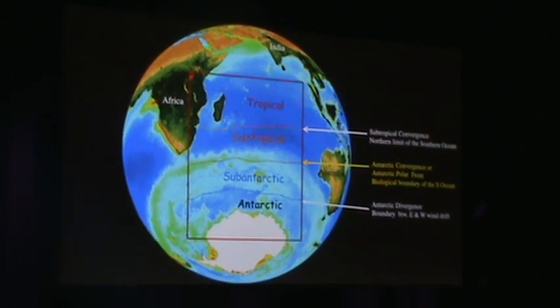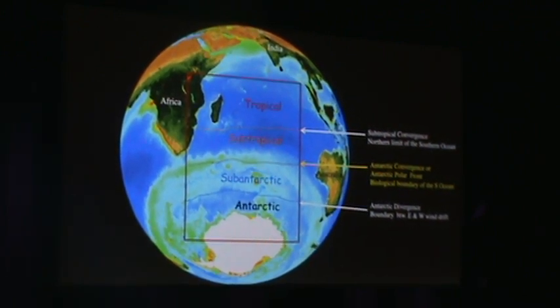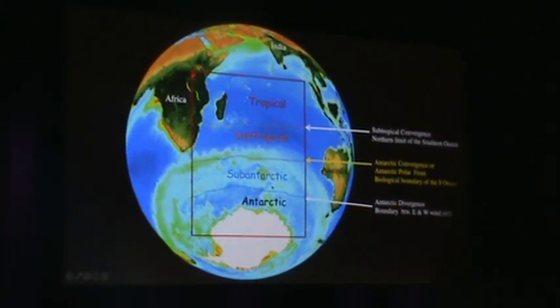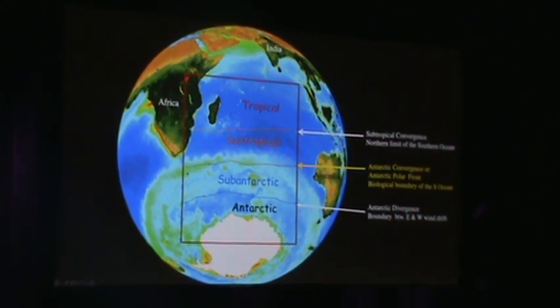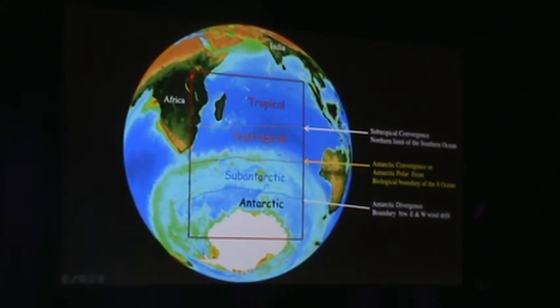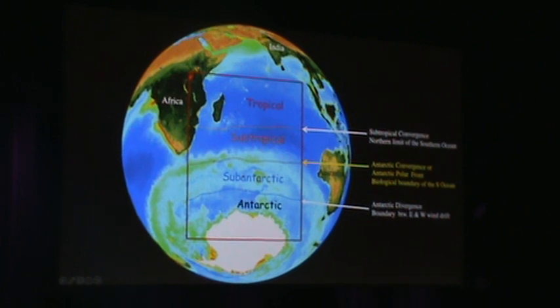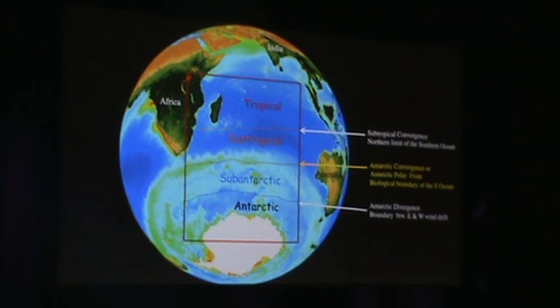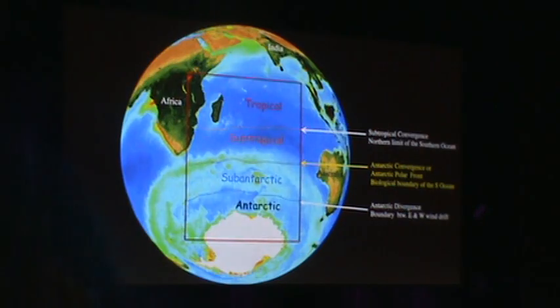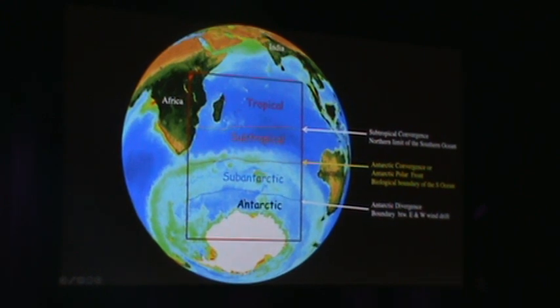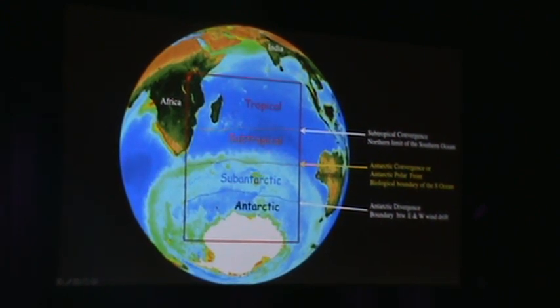Finally, we'll take a look at the Antarctic divergence, where we find the east wind and west wind drifts converging. Most of the circulation in the southern oceans is clockwise around the continent, driven by the west wind — all the water being pushed east. And the east wind pushes all the water to the west. That is what takes place at the Antarctic divergence, which will be particularly important for the upwelling of nutrients at the edge of the continent.